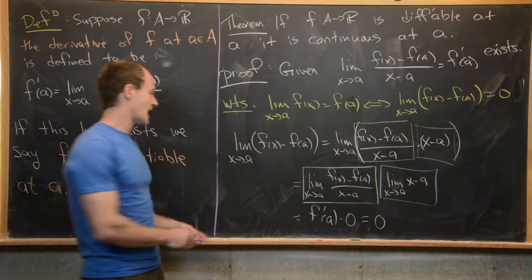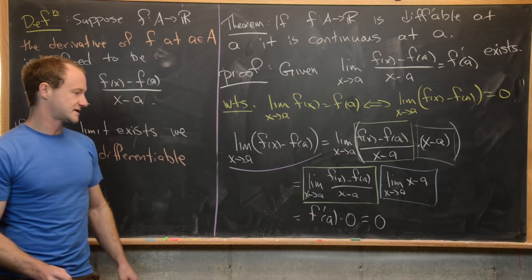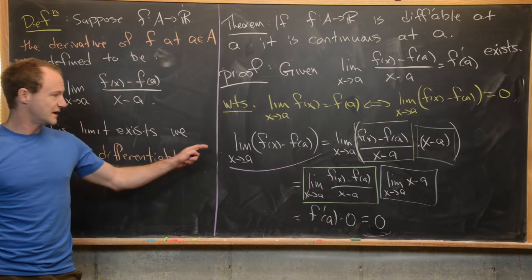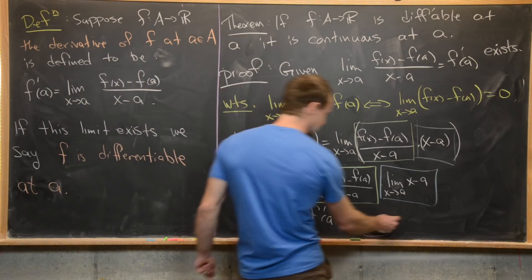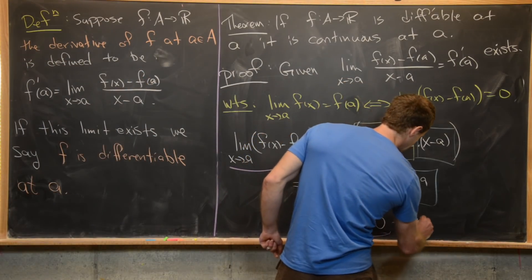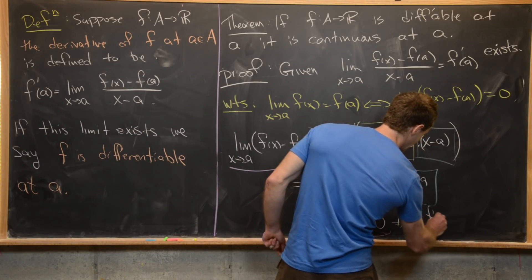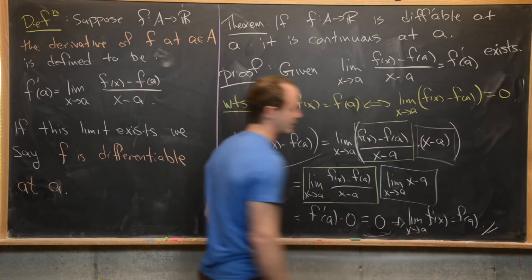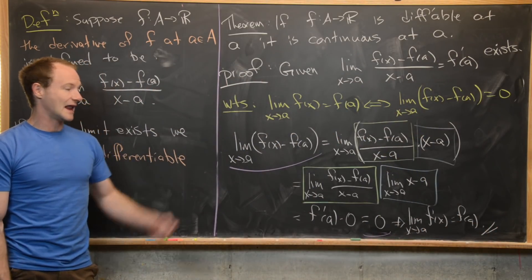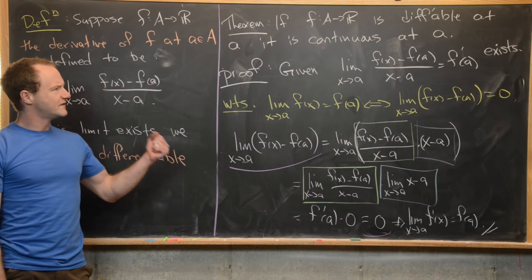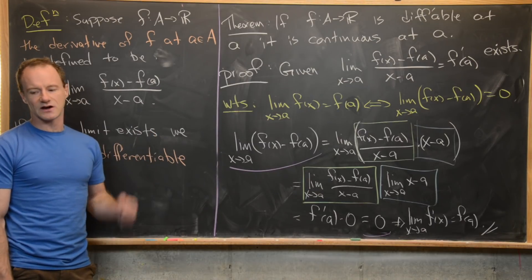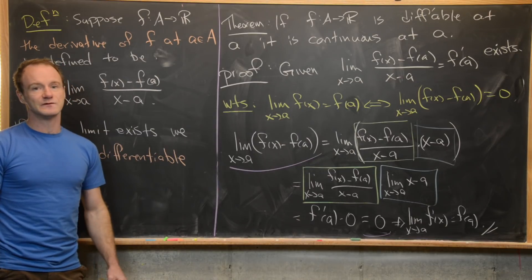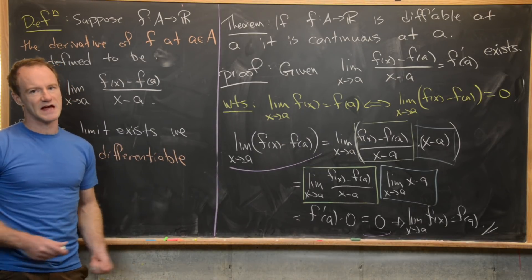So the limit of f(x) minus f(a) is zero, which tells us that the limit as x → a of f(x) equals f(a) — exactly what we needed for f to be continuous at a. Now, if f is continuous at a, is it necessarily differentiable at a? No, it's not, and our absolute value function example proves that. Okay, so that's a good place to stop.